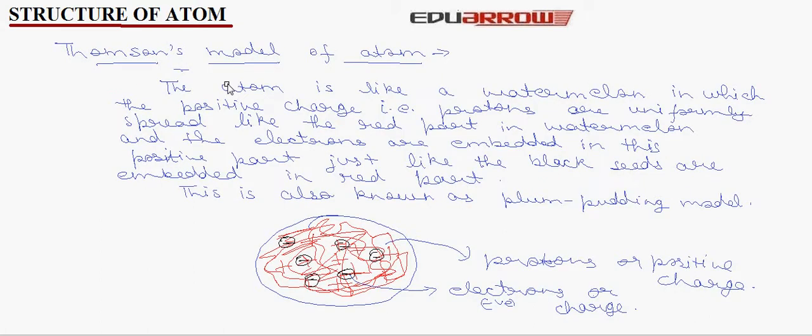Let us understand Thomson's model of atom. Thomson, the scientist who discovered the electron, said that the atom is like a watermelon in which the positive charge, the protons, are uniformly spread like the red part, and the electrons are embedded in this positive part just like black seeds are embedded in the red part. This is also known as plum pudding model.